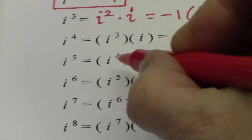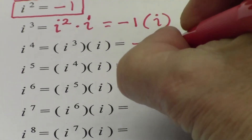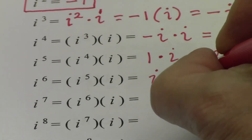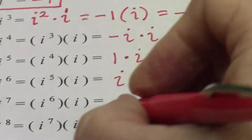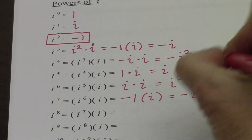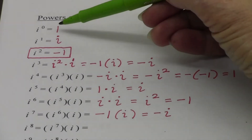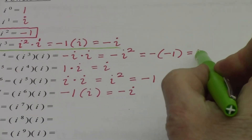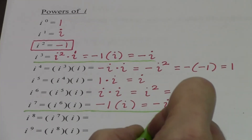i to the fifth equals i to the fourth times i, which is one times i, so it's i. i to the sixth equals i to the fifth times i, which gives us i squared, which is negative one. i to the seventh equals i to the sixth times i, so negative i. And I want to stop and notice — our answers were one, i, negative one, and negative i. And then we kept going but the answers repeated: one, i, negative one, and negative i.